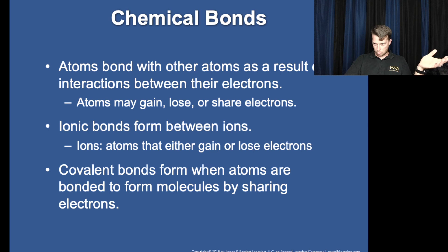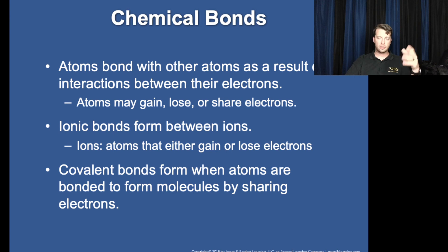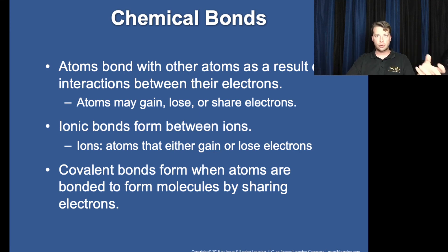Chemical bonds: ionic versus covalent. With ionic bonds, atoms gain or lose electrons — sodium loses an electron, chloride gains one. With covalent bonds, two atoms are actually sharing the electron — you could imagine it orbiting between the two of them.